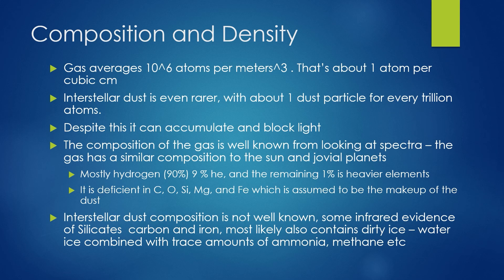The composition of the gas is well known from looking at spectra. Gas has a similar composition to our sun and the Jovian planets — mostly hydrogen, 90% in fact, 9% helium, and the remaining 1% is heavier elements. It is deficient in calcium, oxygen, silica, magnesium, and iron, which is assumed to be the makeup of the dust. The interstellar dust composition is not well known. Some infrared evidence of silicates, carbon, and iron supports that it formed from the gas, but it most likely also contains dirty ice or water ice combined with trace amounts of ammonia, methane, etc., like comet nuclei.